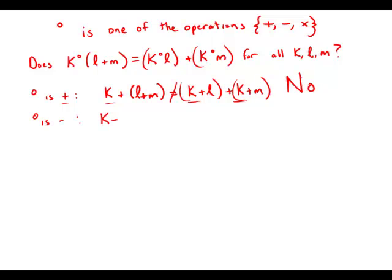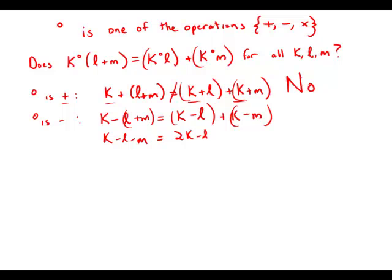Let's say circle is subtraction. Then k minus (L plus M) — distributing the negative sign — equals k minus L plus k minus M. Again, we have the same problem: on one side k minus L minus M, and on the other side 2k minus L minus M. The k versus 2k mismatch means it's not equal. So if circle is subtraction, this equation does not always work.